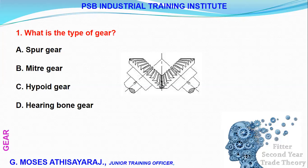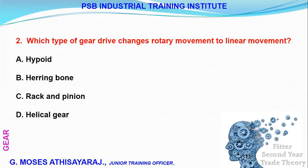What type of gear drive changes rotary movement to linear movement? This converts rotary motion to linear motion via a gear drive.